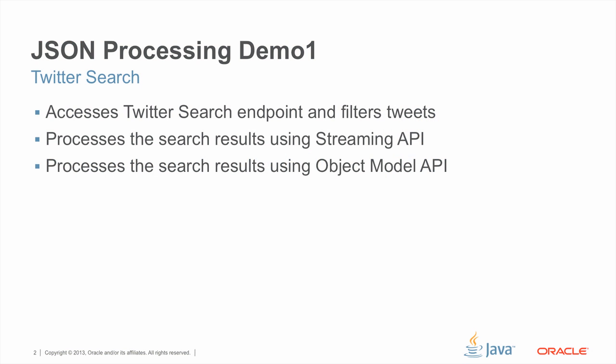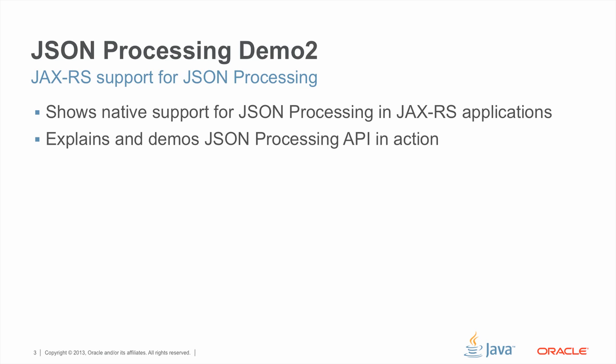We have two demos in this screencast. The first demo is a standalone demo that primarily accesses Twitter search results and filters some tweets. The same Twitter search results are processed using the streaming API as well as the object model API, so we'll know the difference between when to use each. The second demo shows JAX-RS native support for JSON processing, and we'll explain how resources can take advantage of JSON processing.